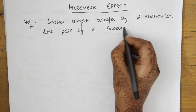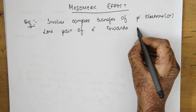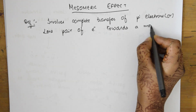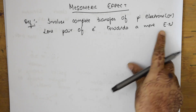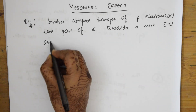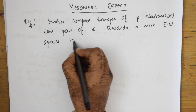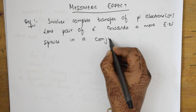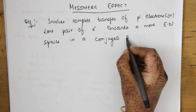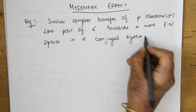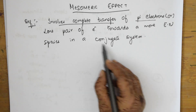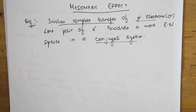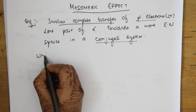The transfer occurs towards a more electronegative species — electronegative means electron withdrawing, meaning it will drag the electron density towards it. This all happens in a conjugate system, which is important. Whenever you are writing the definition in the exam, remember the keywords: it involves complete transfer of pi electrons in a conjugate system.